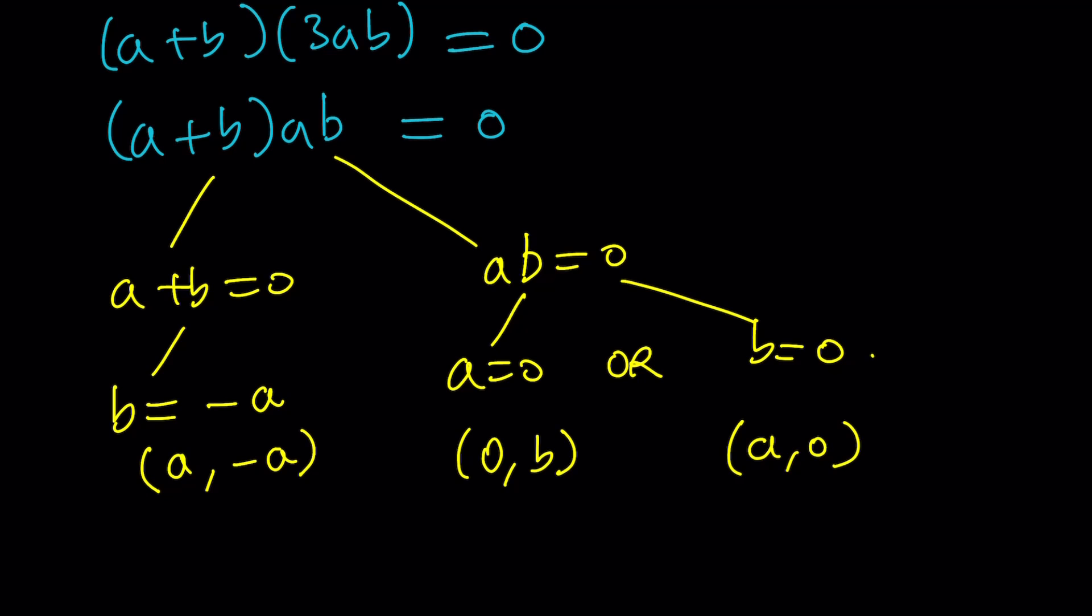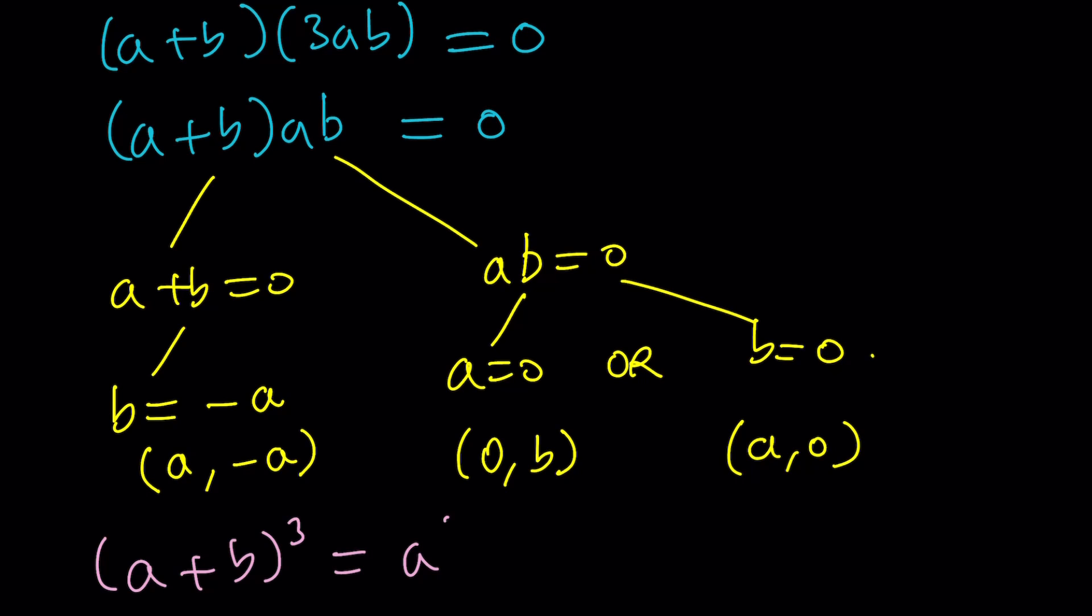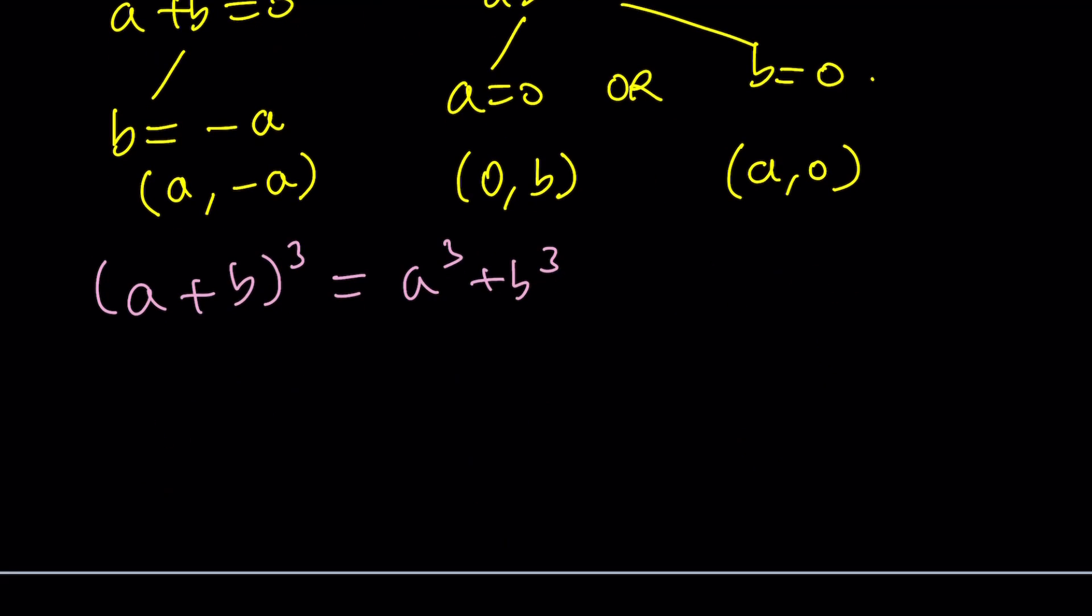So now there's another way to approach this problem. Let's rewrite it. Remember our formula, the identity that we used for cubes. That was the formula: a cubed plus b cubed plus 3ab times a plus b. Or you can just use the binomial theorem.